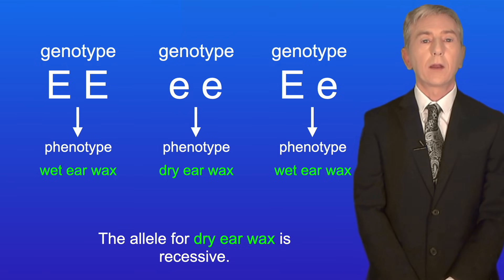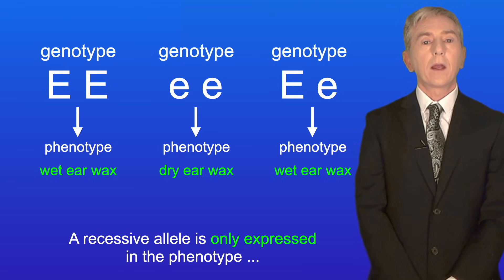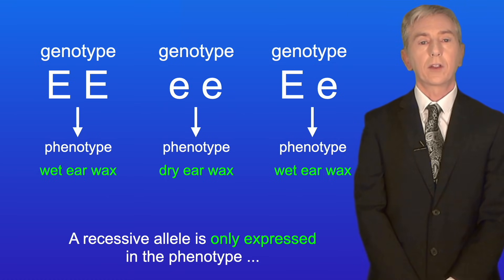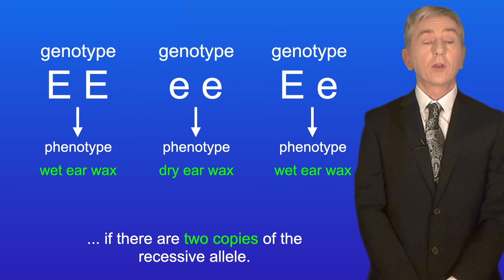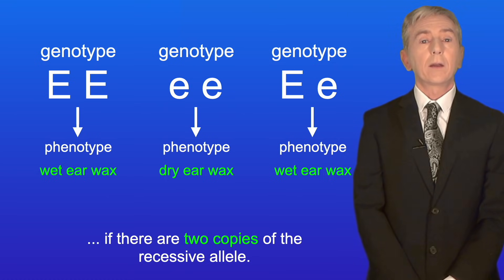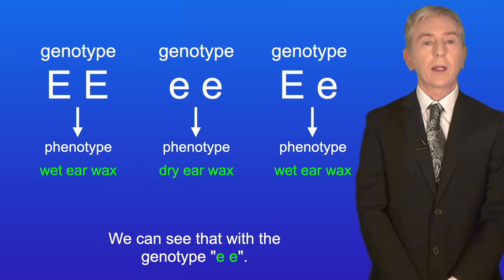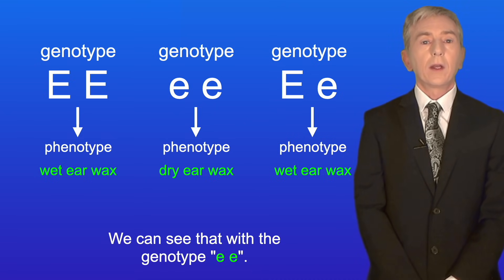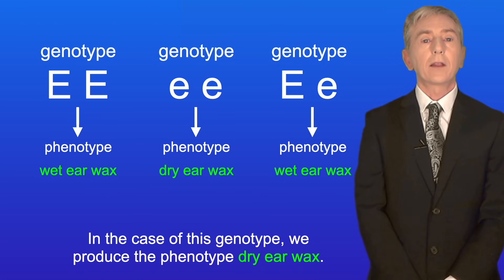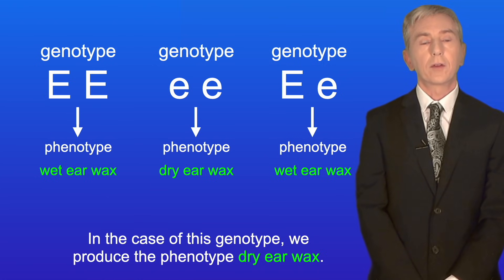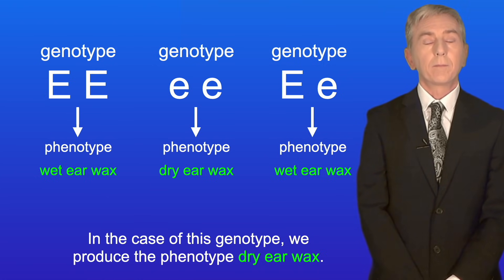The allele for dry earwax is recessive. A recessive allele is only expressed in the phenotype if there are two copies of the recessive allele. We can see that with the genotype ee — in the case of this genotype we produce the phenotype dry earwax.